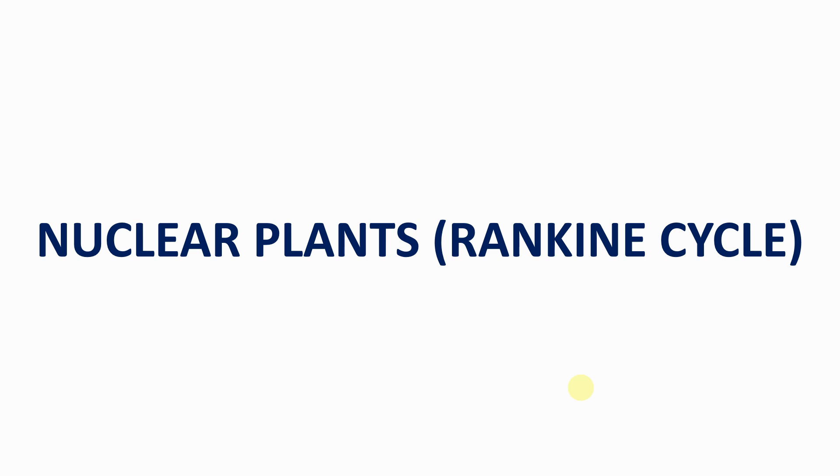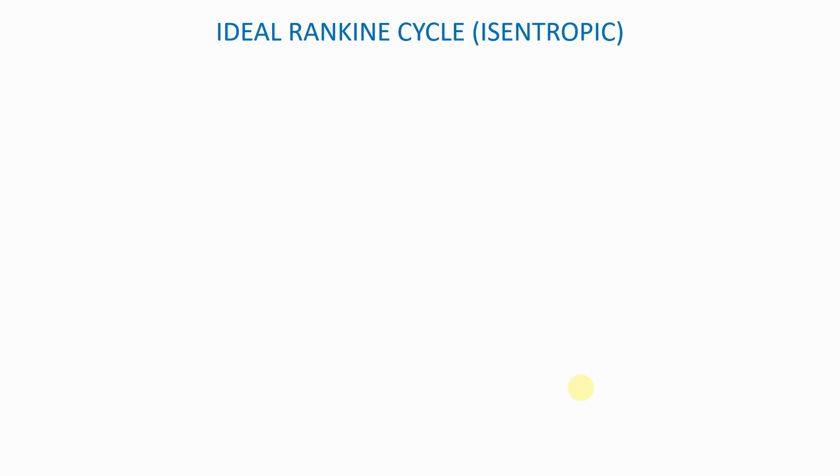Having said that, let's begin. Now we will look at the ideal Rankine cycle, because when you're dealing with nuclear plants, there are two types of Rankine cycles that we will look at. The first one is the ideal Rankine cycle, and what we mean by that is that the work done through that cycle is isentropic. So just bear in mind that when you're dealing with an ideal Rankine cycle, the work done is isentropic.